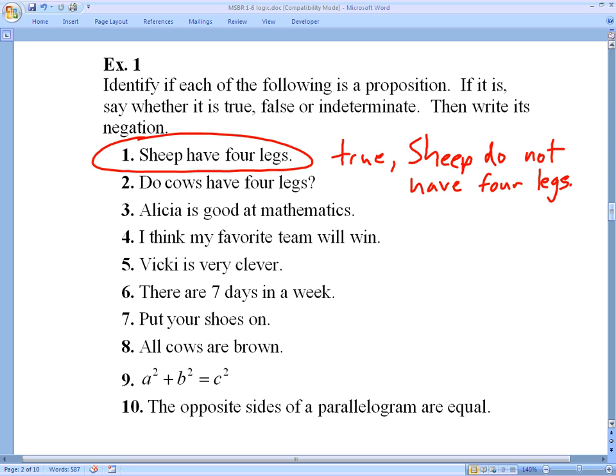Do cows have four legs. Number two, that is not a statement. So it is not a proposition. Done. Alicia is good at mathematics. That is definitely a proposition. I might argue that is indeterminate because we don't know anything about Alicia. The negation of that would be Alicia is not good at mathematics.